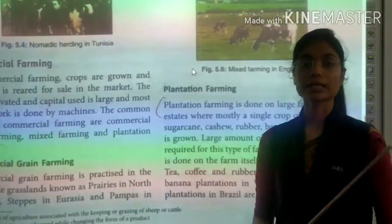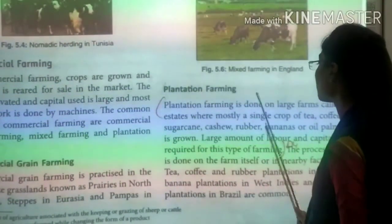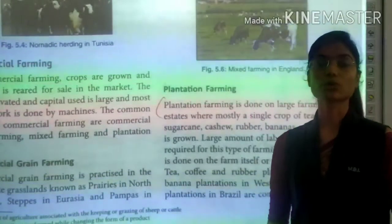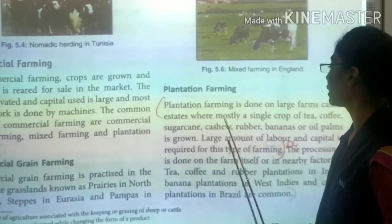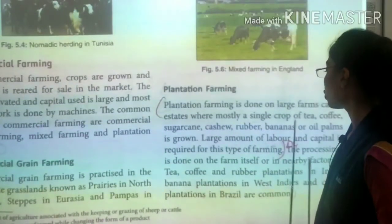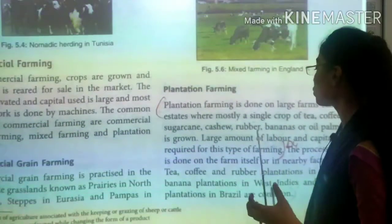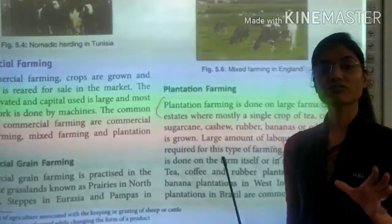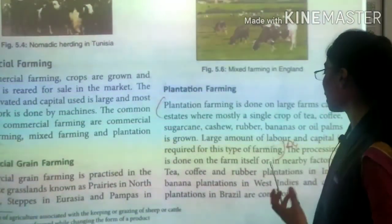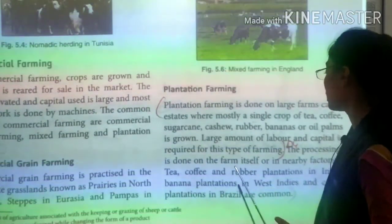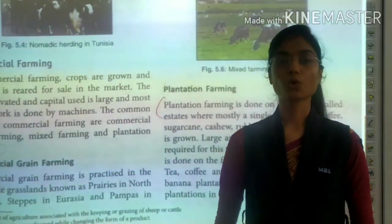The third type of commercial farming is plantation farming. It is done on large farms called estates, where mostly a single crop is grown — such as tea, coffee, sugarcane, cashew, rubber, bananas and oil palms. A large amount of labor and capital is required. I hope you understand. Thank you, students.